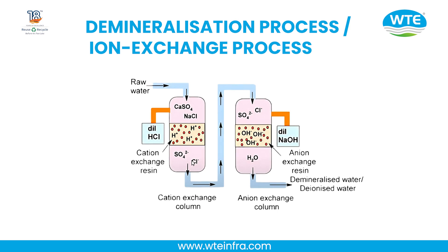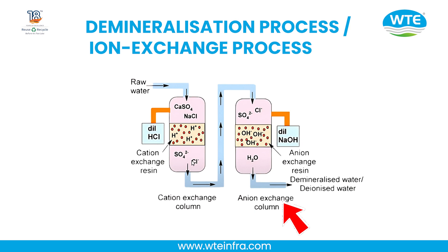This process requires two towers or columns. The first is the cation exchange column, which is packed with cation exchange resins capable of exchanging H⁺ ions. The anion exchange column is packed with anion exchange resin capable of exchanging OH⁻ ions. Raw water is water from all water sources collected in a reservoir, and it contains all types of minerals.